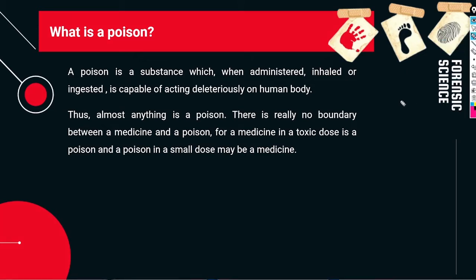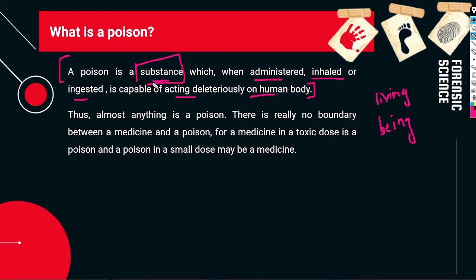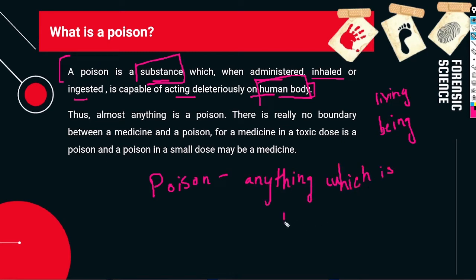The first thing that comes to mind when we hear the word 'poison' is something which can kill any living being. Poison is a substance which, when administered, inhaled, or ingested, is capable of acting deleteriously on the human body. In simple terms, any substance which when taken, ingested, inhaled, or administered causes adverse effects or death in the human body is a poison.